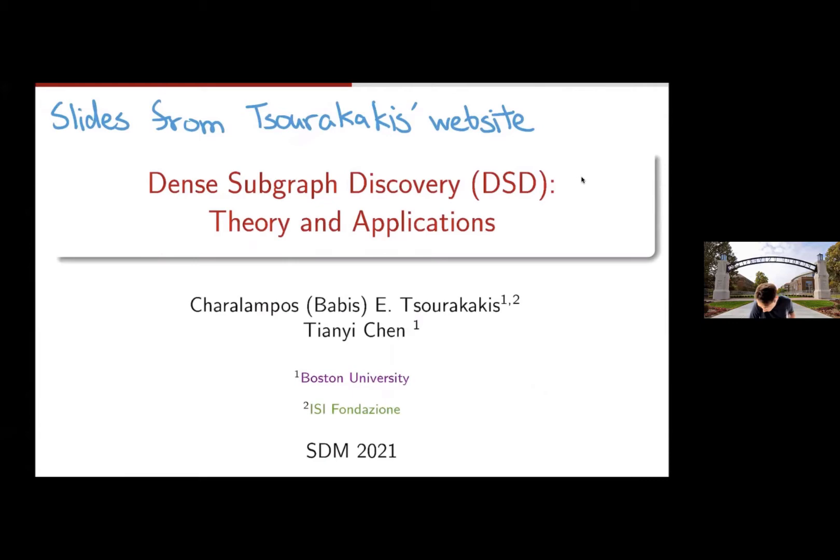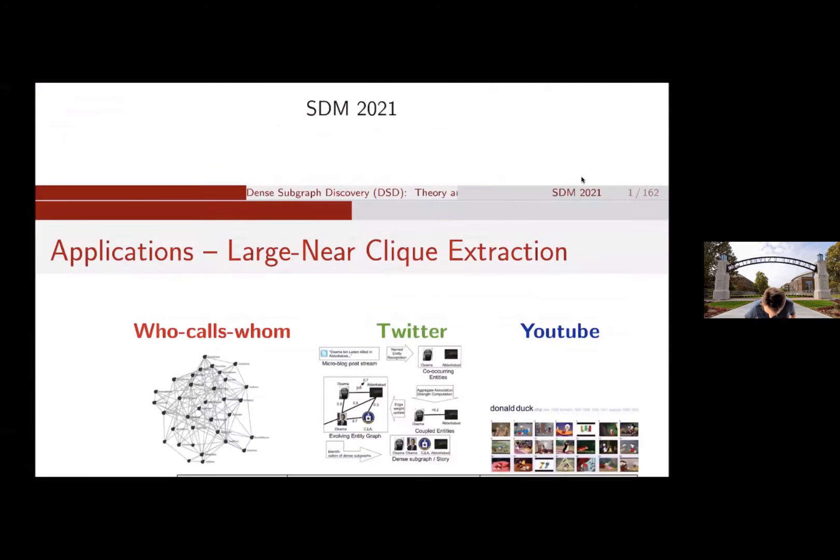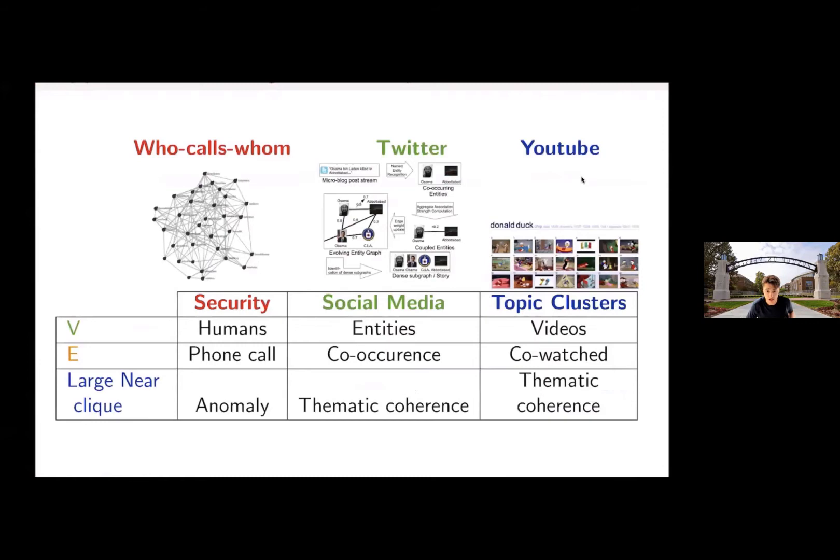Some of the examples he gives are lots of interesting situations in data mining where you want to extract something like a clique. On the left-hand side, if you're in security and you're keeping track of people's phone calls, if you have a lot of people talk to each other, that's some kind of anomaly that raises some flags. When people are processing tweets and stuff, they find subjects that occur frequently with each other and they draw edges there and they can extract some info.